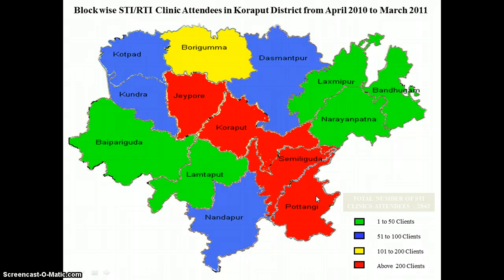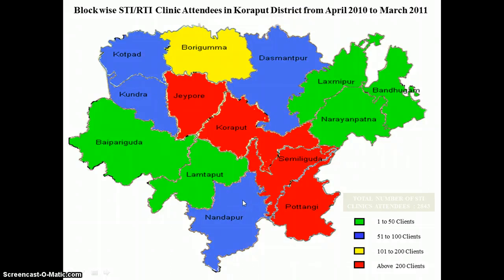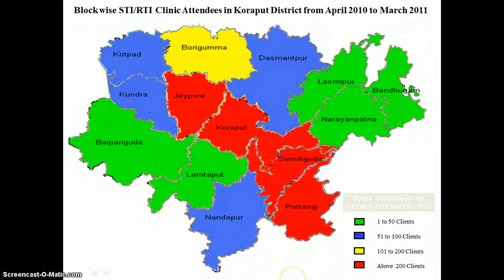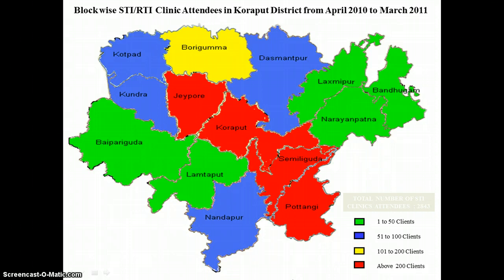Potangi should be considered an important piece of information. We could also see Koraput, Kundra, Deshanpur, and Nandampur, where there are about 50 to 100 clinic attendees over the year. The most striking blocks to keep in mind are Jayapur, Koraput, Simdiguda, and Potangi especially, because Potangi is a non-TI intervention area but still shows the maximum number of STI clinic attendees compared to TI intervention areas.